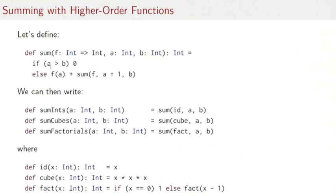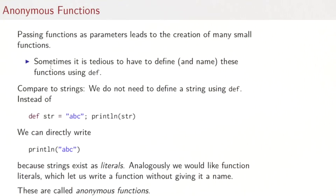Looking at the previous example again, we have successfully shortened the definition of sum ints, sum cubes, sum factorials. But there's an annoying detail. We had to name all the little auxiliary functions. We've gained some program code here but we spent more in the definition of all these auxiliary functions. We've seen that passing functions as parameters can lead to the creation of many small functions and sometimes that's tedious.